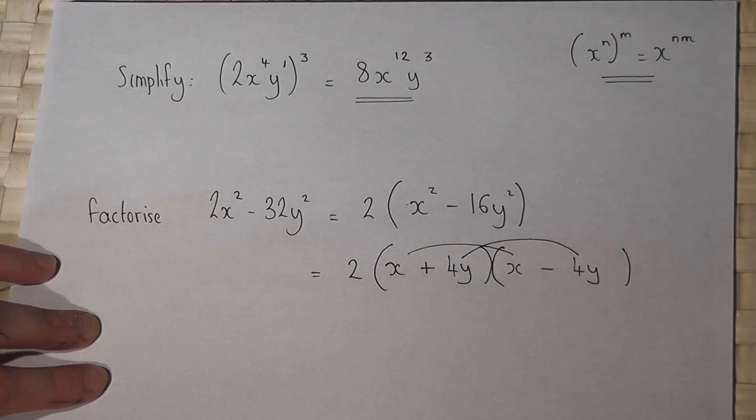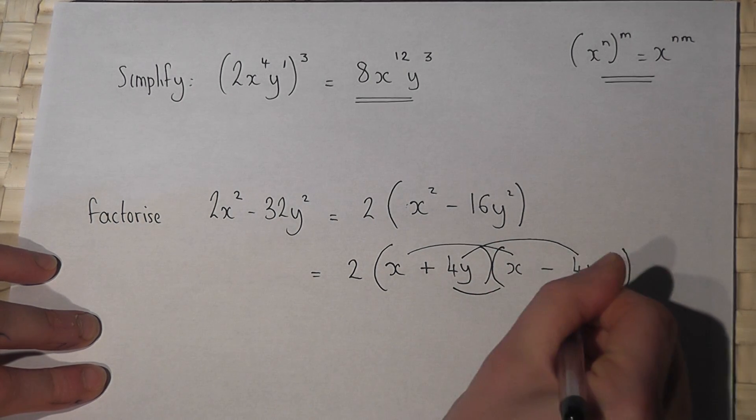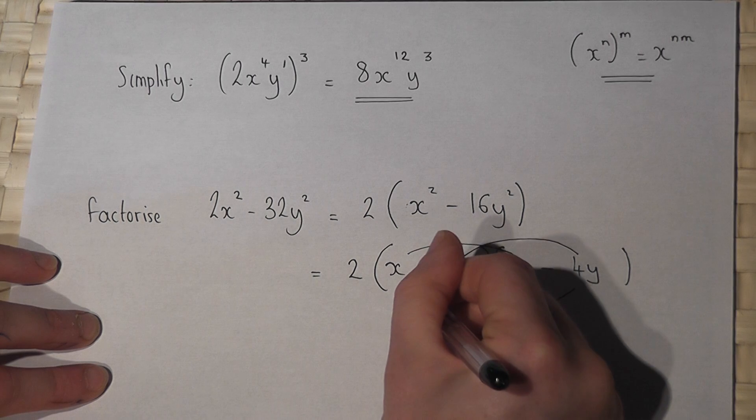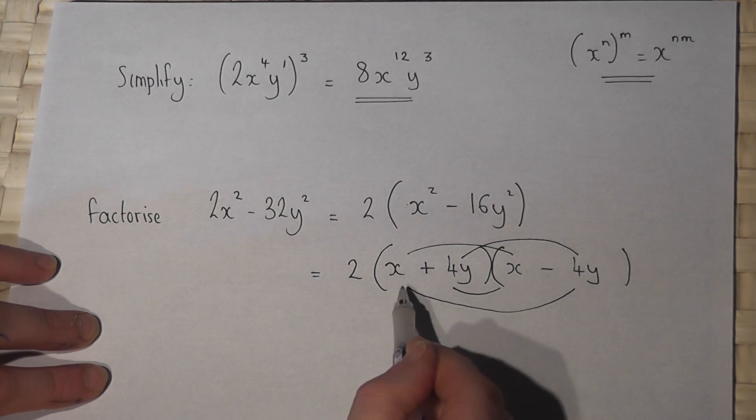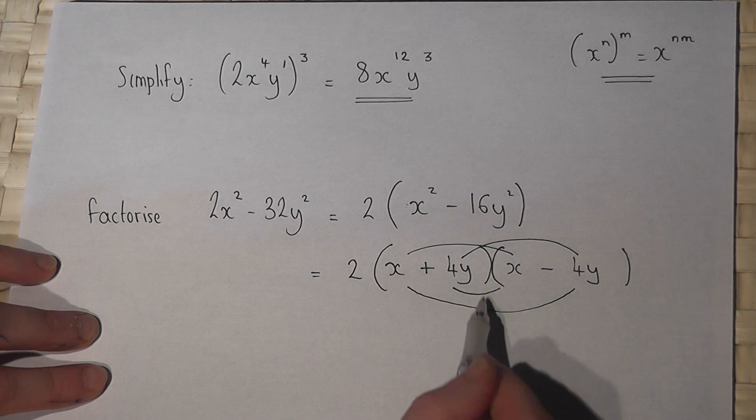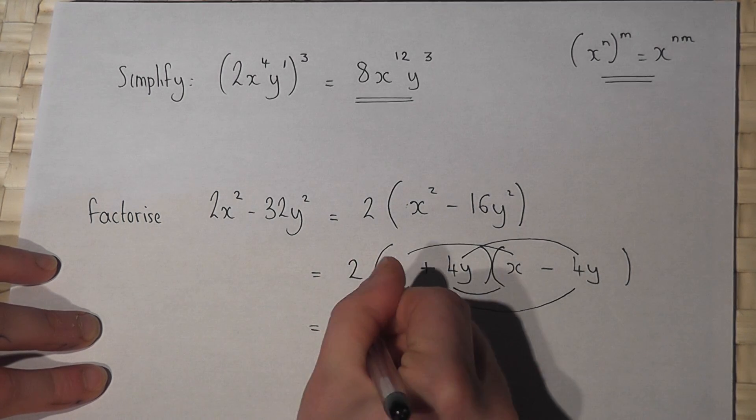But if we look at these two terms here, this gives me a 4yx, this gives me a negative 4yx. These cancel out and so we're left with the term above.